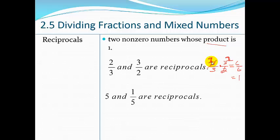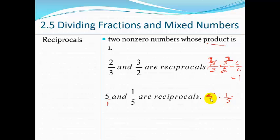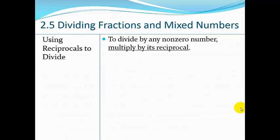Every number has a reciprocal. Even a whole number — I can always put it over 1 to make it look like a fraction. We don't usually bother writing whole numbers over 1 unless we need to. So 5 and one-fifth are reciprocals, because 5 times one-fifth: write 5 as 5 over 1, multiply straight across — 5 times 1 is 5, 1 times 5 is 5, and 5 divided by 5 is 1.